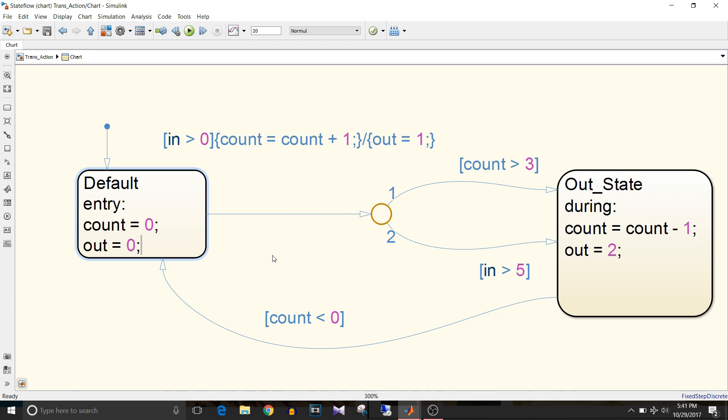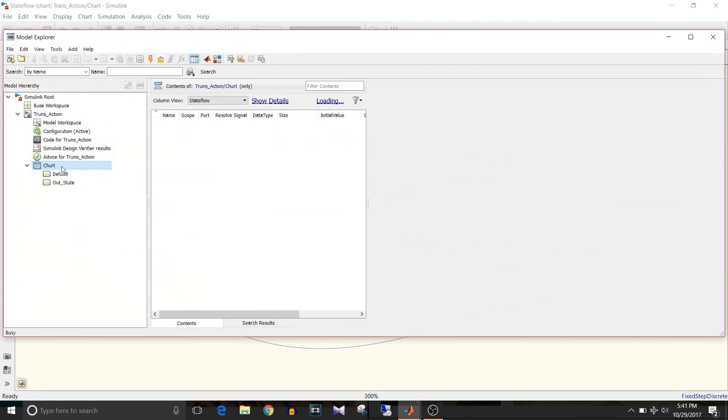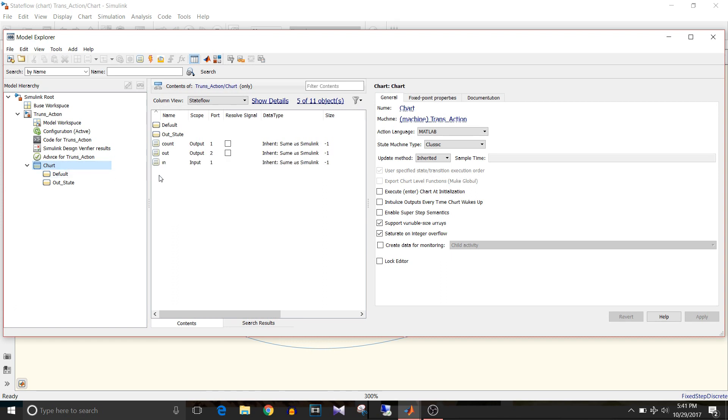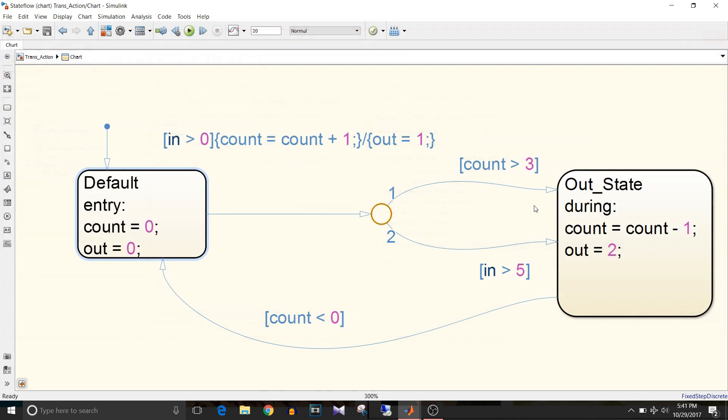All input variables are added using the model explorer, that is this option next to configuration parameter. If you go to chart, you can see here the state names and the input output variables. For this model, the solver is discrete and fixed-step solver. Now let's simulate this model.